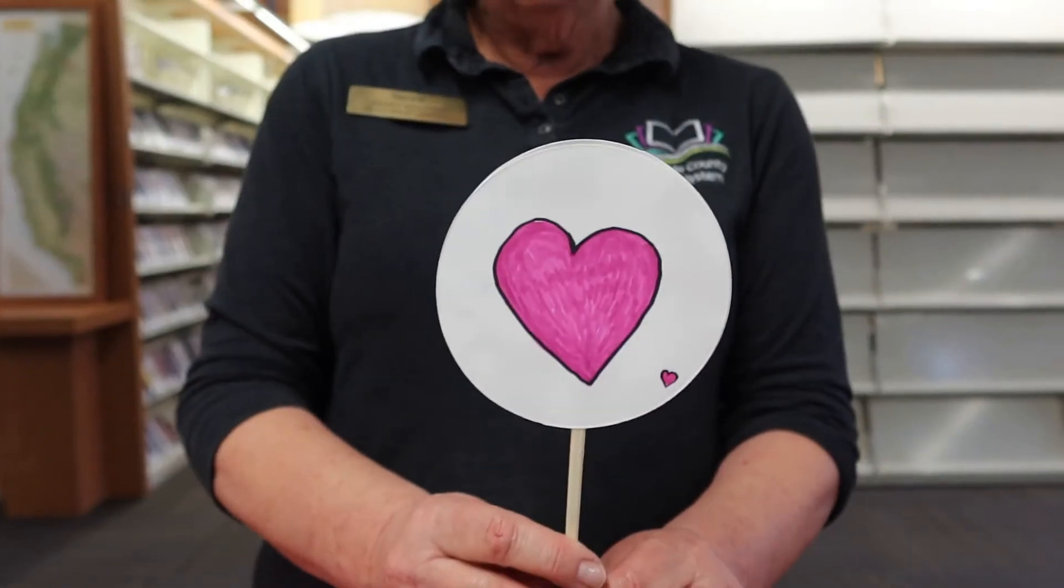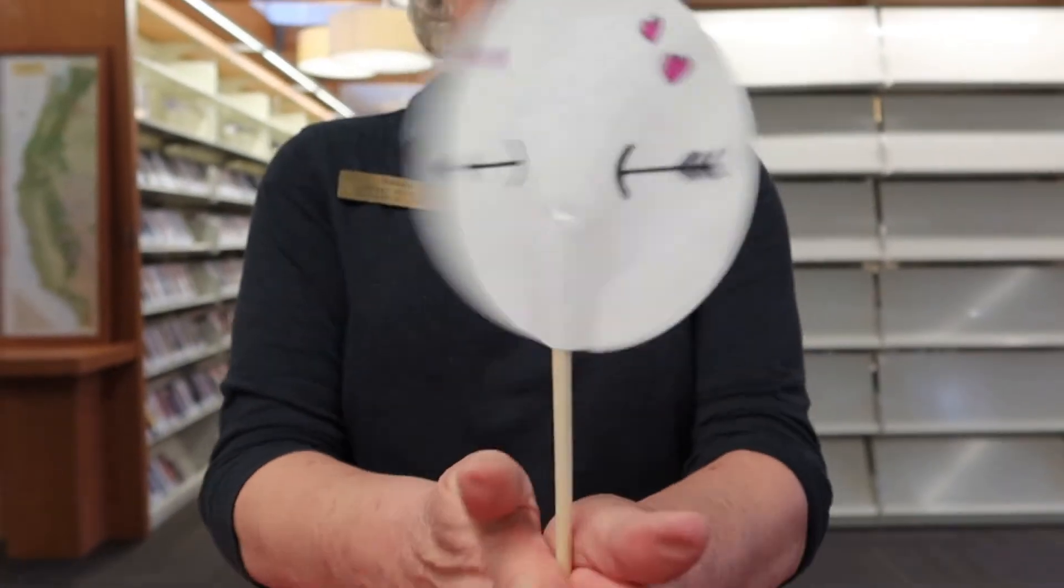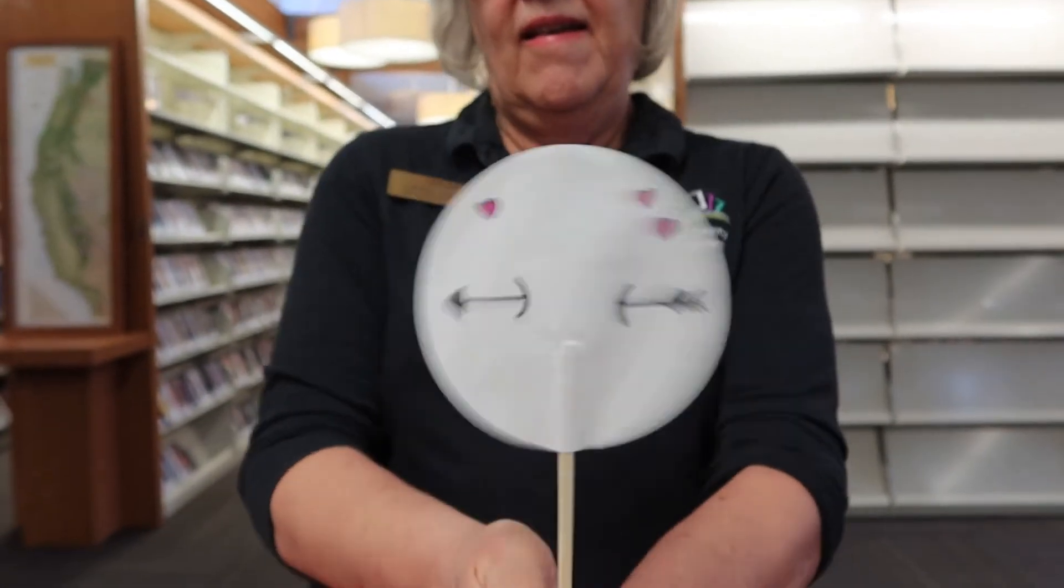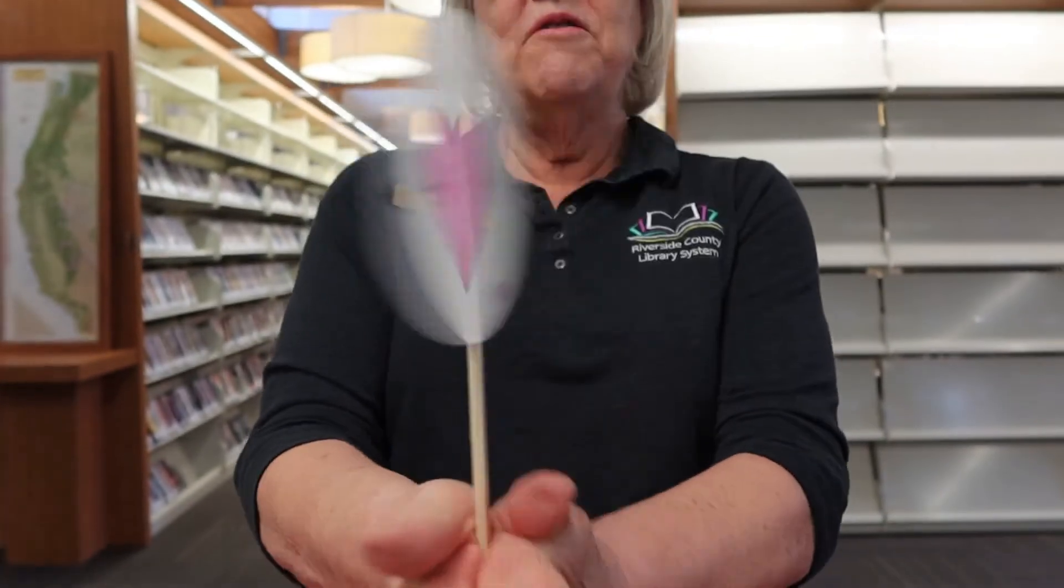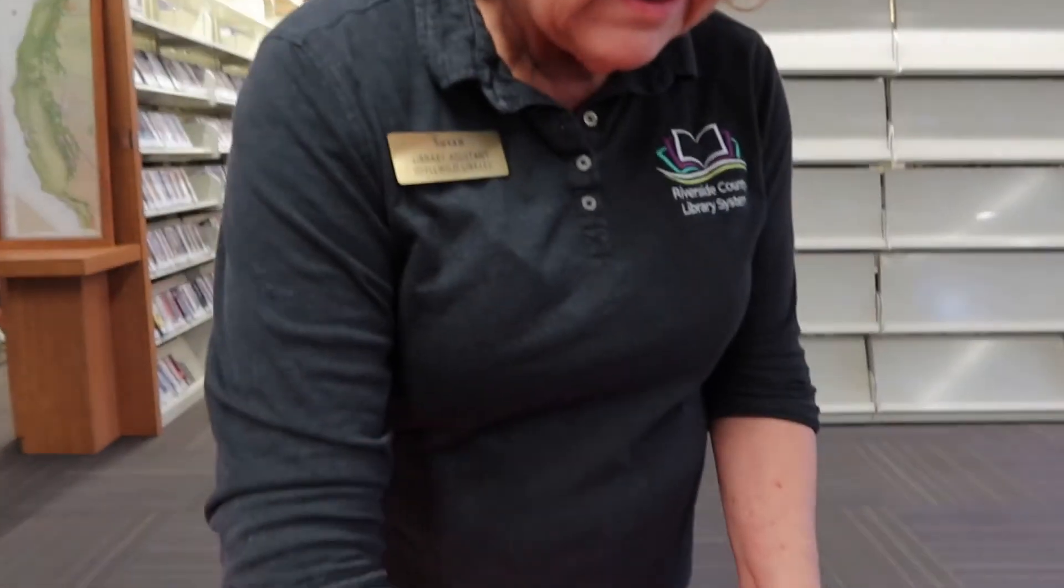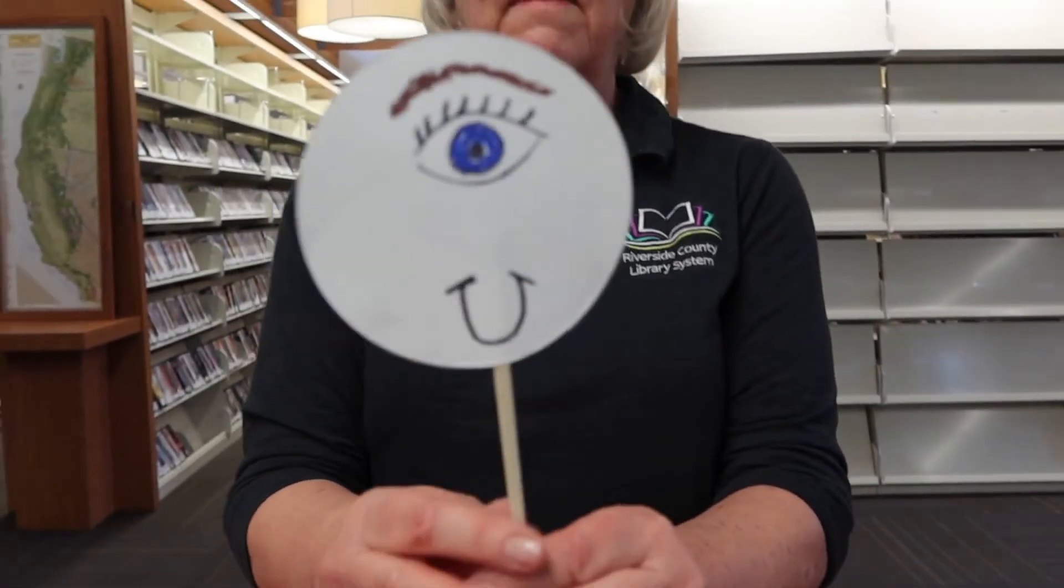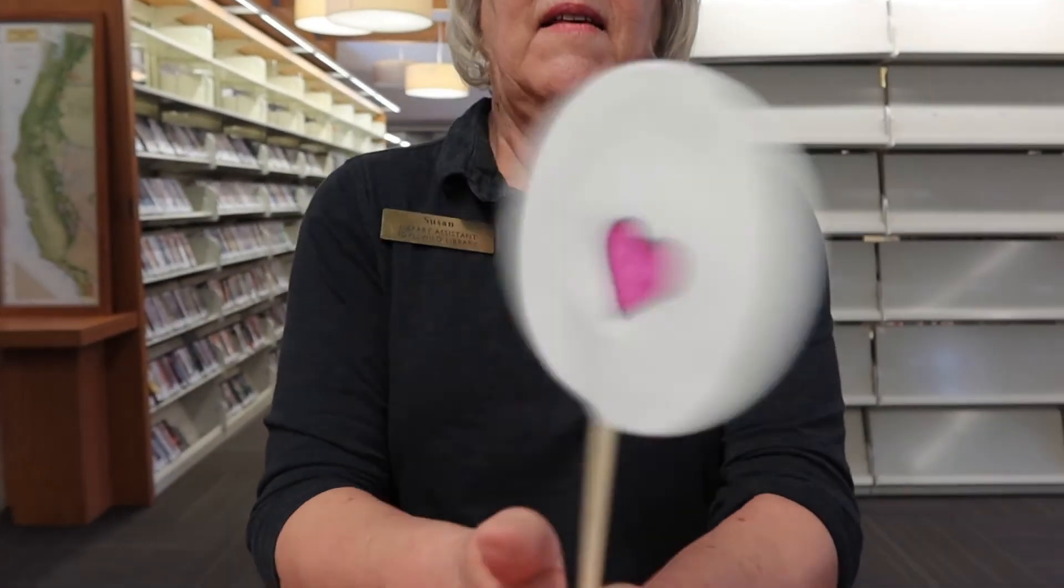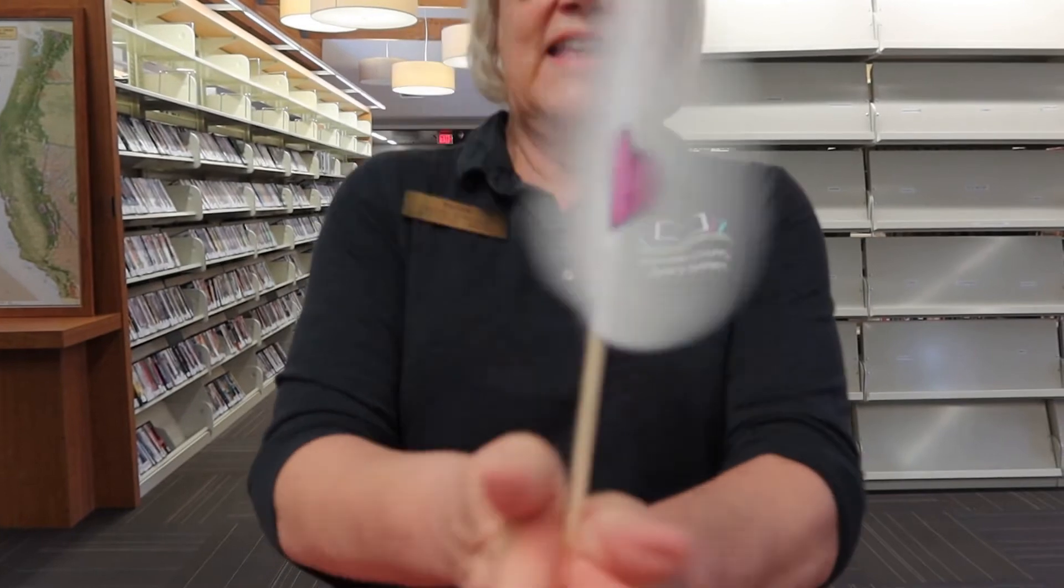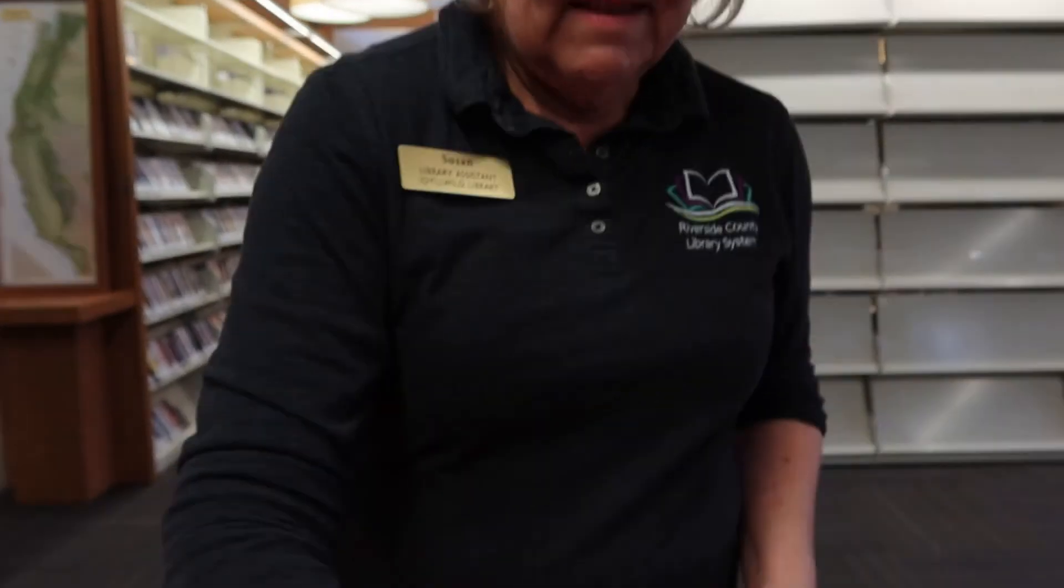Now let's try the heart and the arrow. Can you see the arrow going right through the heart? And let's try this one that says I love you. Can you see the eye and the heart and the you? There we go.